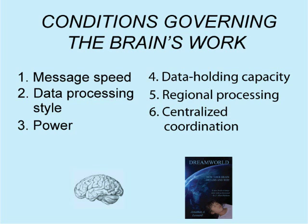Certain basic facts determine how the brain works, so I will delve into such facts about brain impulse speed and other interesting things about how the brain processes information, the brain's power, its data holding capacity, its regional arrangements, and the critical coordinating structures toward its center that play a major role in lots of brain activities.